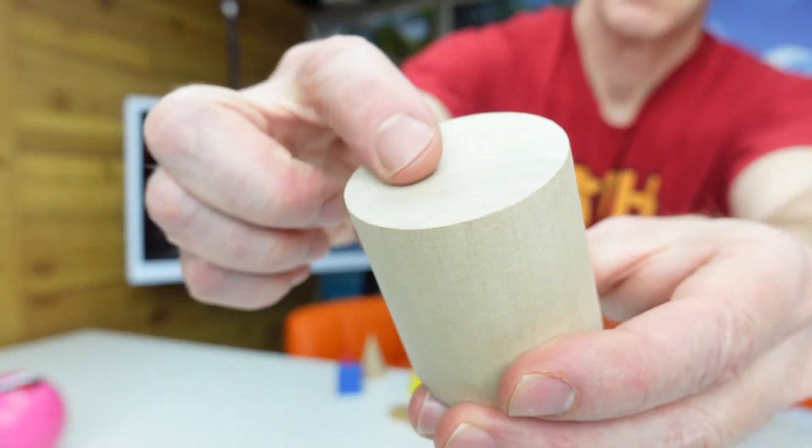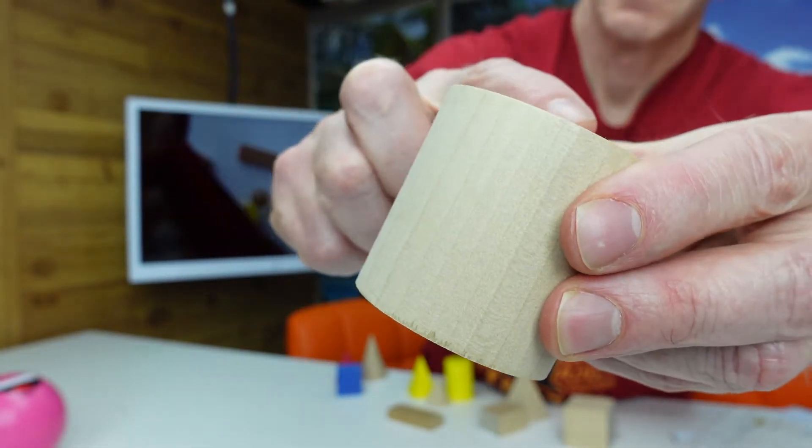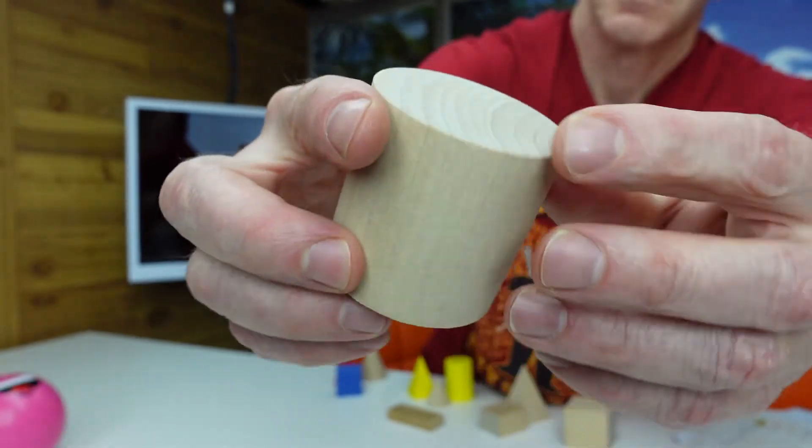This is a cylinder. It has two faces, zero edges, zero vertices.